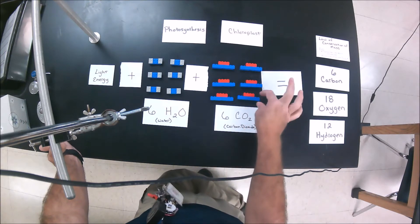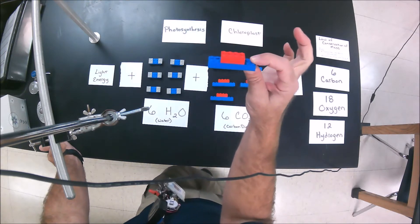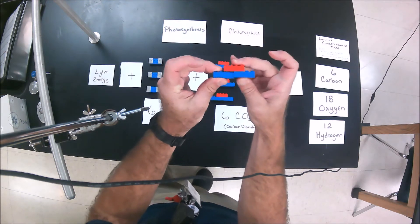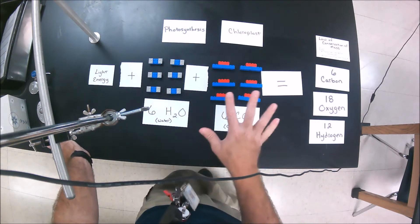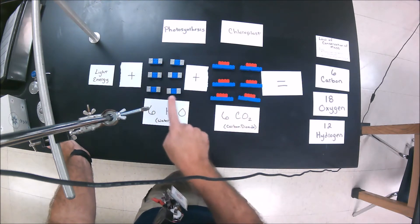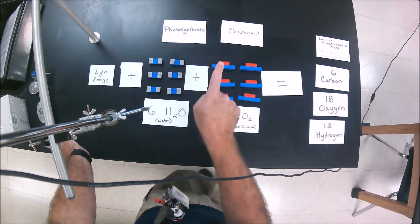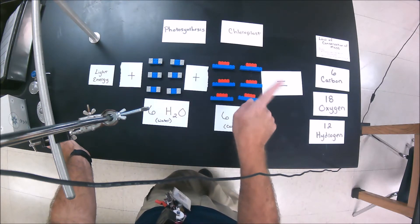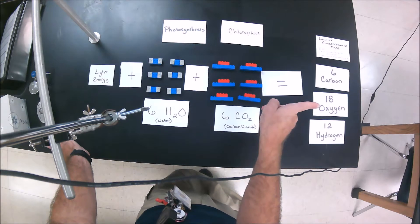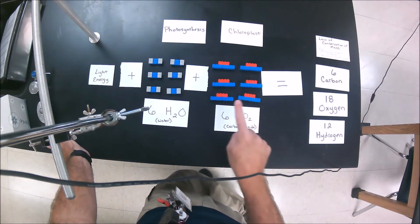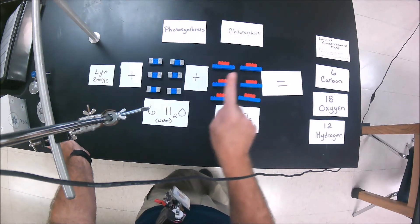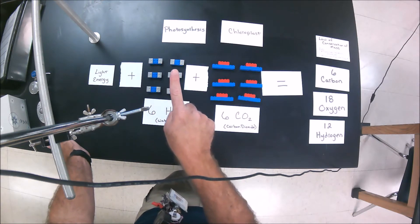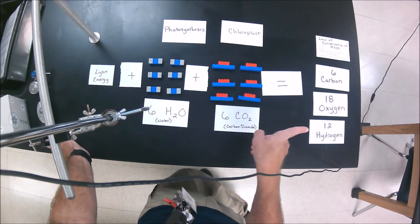Then I have six carbon dioxides. Carbon dioxide is one carbon and two oxygens. All total, counting them up, I've got 18 oxygens, six carbons, and 12 hydrogens.